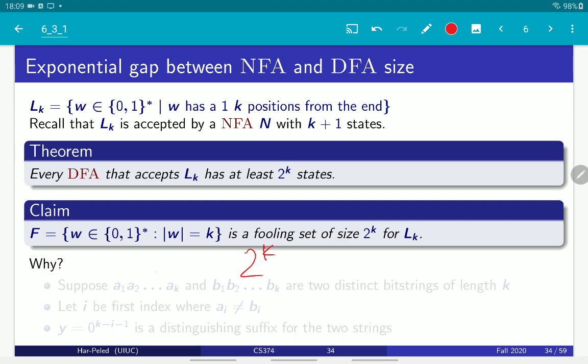all the strings in this set are distinguishable. That means that any finite automata, DFA, that accepts this string must have 2 to the K states, because we proved the lemma that says that the size of a fooling set is a lower bound on the number of states in the DFA accepting the language. So we just need to argue why this is indeed a fooling set. And the proof is easy, right?